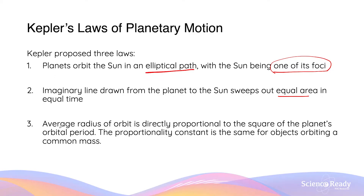The third law states that the average radius of orbit of the planet is directly proportional to the square of the planet's orbital period, that is the time taken to complete one revolution of the elliptical orbit. The proportionality constant is the same for objects or planets that orbit the same star, or the same central mass.